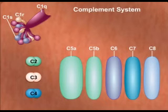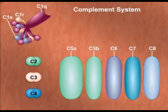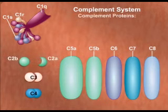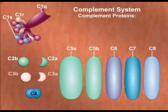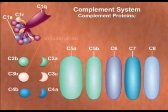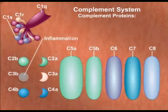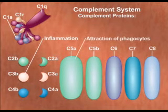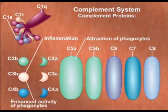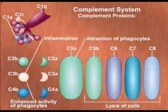The complement system consists of a group of over 30 serum proteins that play an important role in both innate and adaptive immunity. Complement proteins participate in host defense processes such as inflammation, attraction of phagocytes to an infected area, enhanced effectiveness of phagocytes, and lysis of cells.